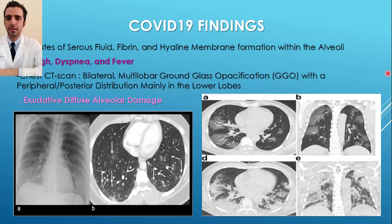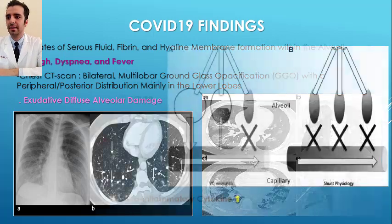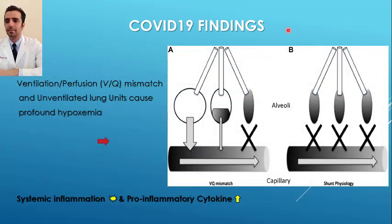Here in the left picture you can see GGO patterns, shown by a white arrow. You can also see the different extension of COVID-19 in a patient's chest CT scan. These pathologies can cause profound hypoxemia with near-normal arterial carbon dioxide levels due to unventilated lung units and ventilation-perfusion mismatch.